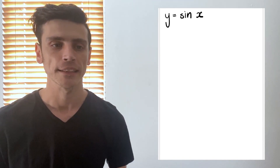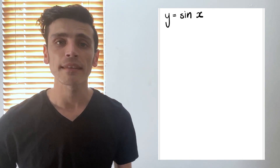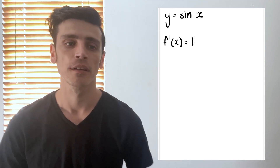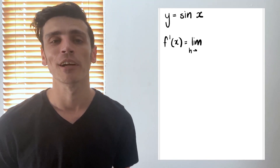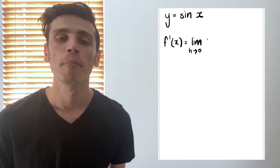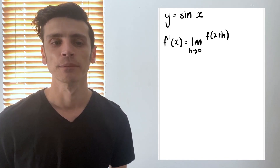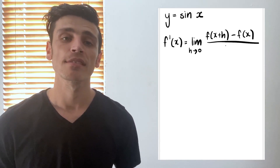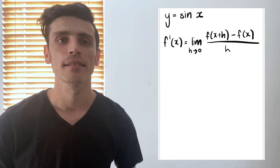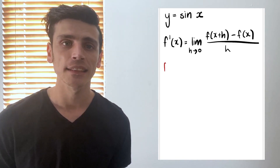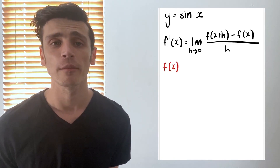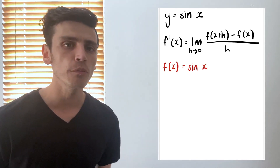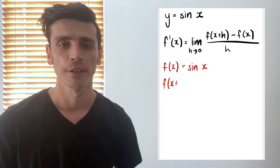In this case, we're using sine of x. Our limit definition formula is: the derivative of f(x) is equal to the limit as h approaches 0 of f(x+h) minus f(x), all divided by h. What we're trying to do is substitute our function into this equation to solve. Our function f(x) is going to be sine of x, so we just put that in where we would have f(x).